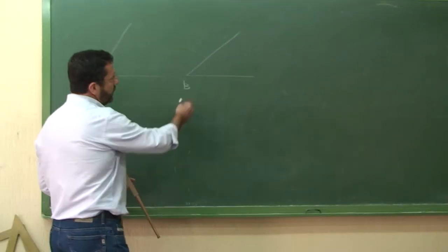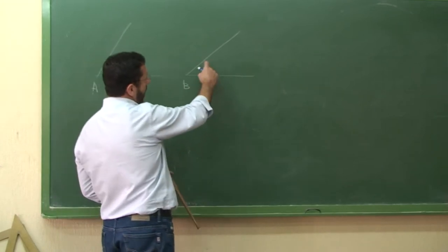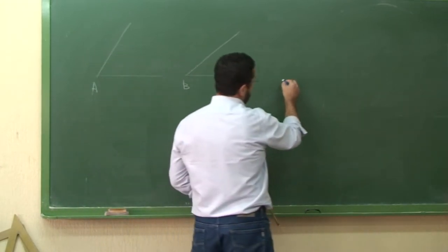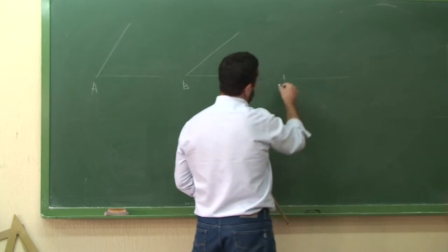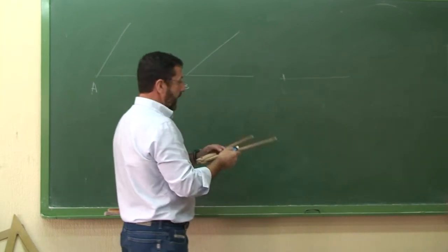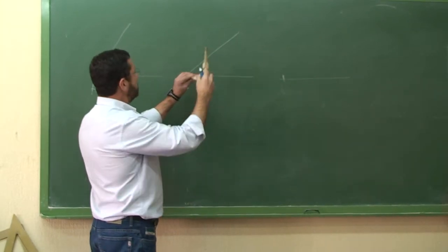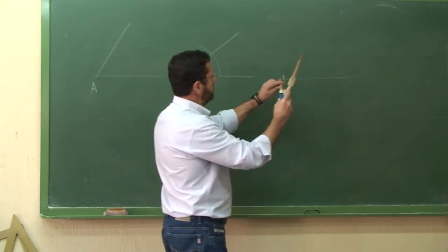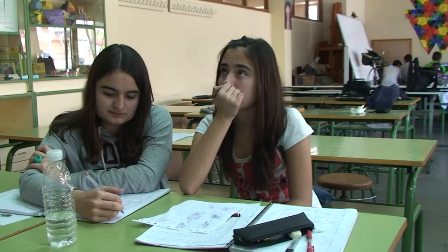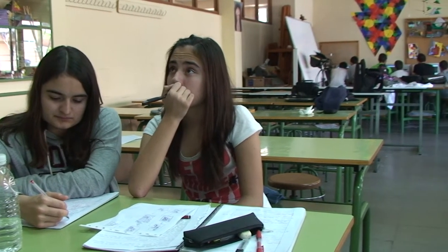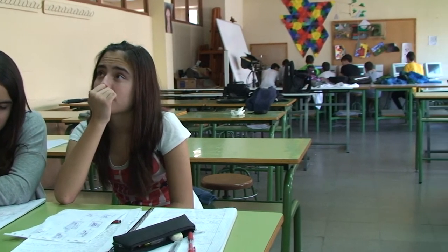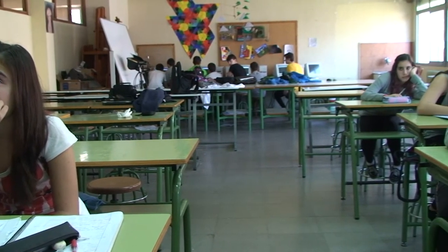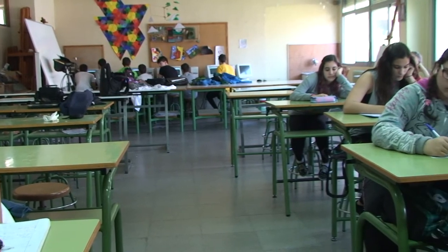For example, if we want to draw an angle equal to angle B, first we want to draw a line. After that, we are going to draw an arc, and with the same radius we are going to draw other arcs. After that, we are going to place our compass where the arc crosses to the line.